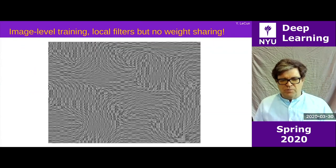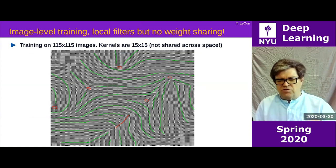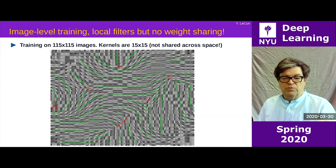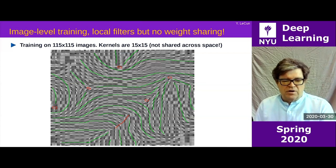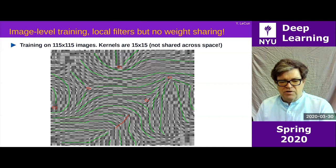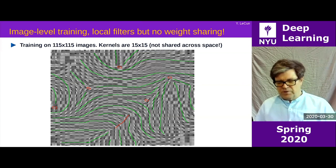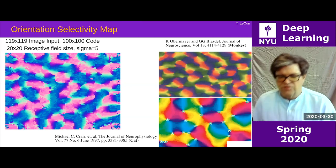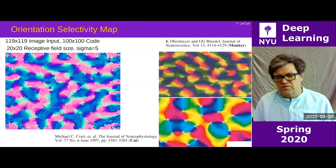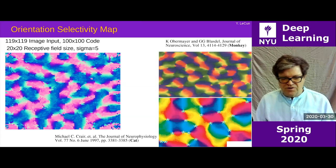This experiment is similar but there are only local connections and no weight sharing. What you see is this organization of features in terms of what neuroscientists call pinwheel patterns — those patterns where orientation selectivity varies continuously as you go around one of those red dots. Take one red dot, do a little circle around it, and the orientation of the edge extractor varies continuously as you move around. These are called pinwheel patterns, and they are observed in the brain.